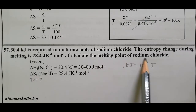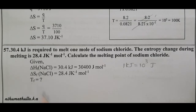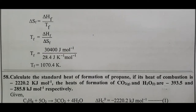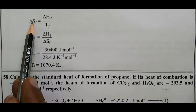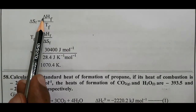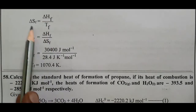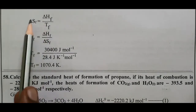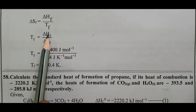Calculate the melting point of sodium chloride. Using delta S value from the formula, entropy change equals enthalpy change divided by the melting point temperature. Rearranging gives the melting point T equals delta H divided by delta S.